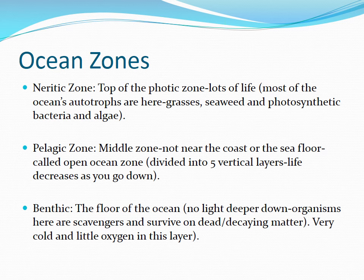Moving on to more zones: the neritic zone is the very top of the photic zone and has lots and lots of life because of all the sunlight. Most of the ocean's autotrophs are here — autotrophs are organisms that make their own food from sunlight. Those include grasses, seaweed, photosynthetic bacteria, and algae. There's lots of life in the neritic zone because of the sunlight.